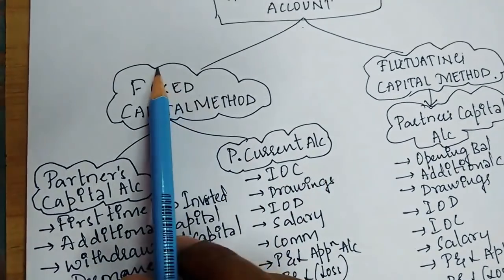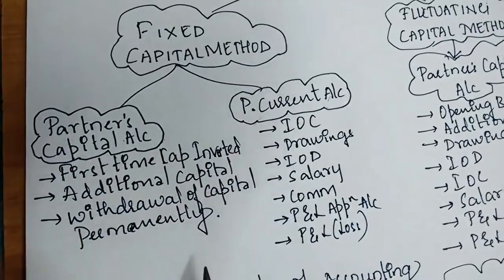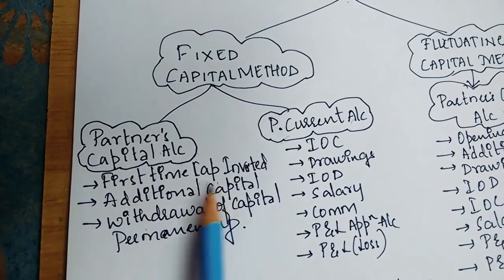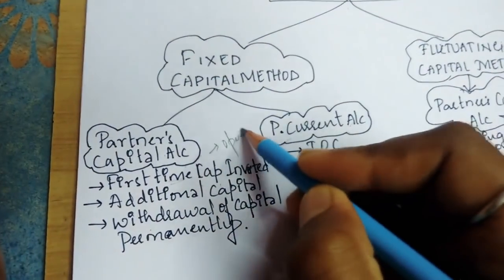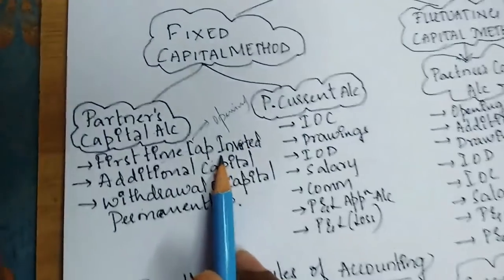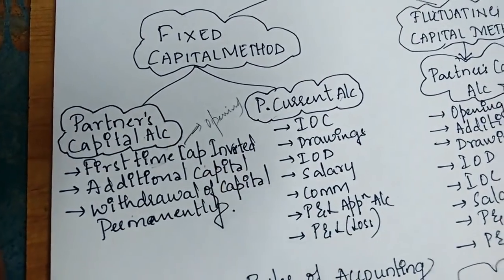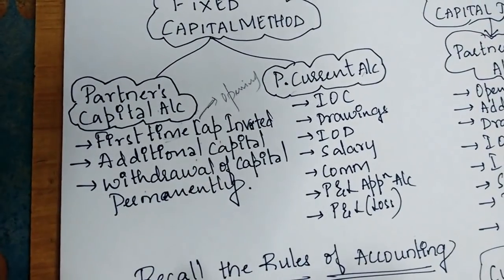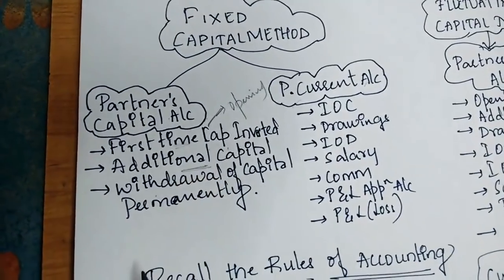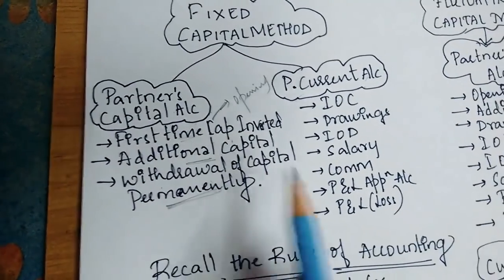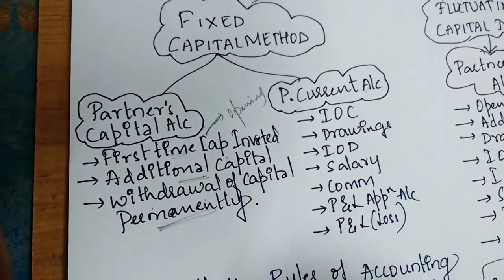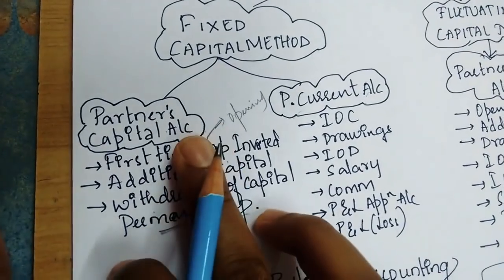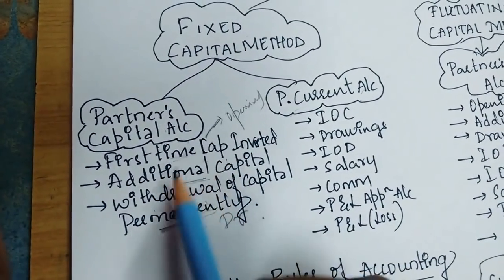Under the fixed capital method, two accounts are written: the partner's capital account and the partner's current account. In the capital account, items recorded include: opening capital on the credit side, since capital increases are credited; additional capital invested, which is also credited; and withdrawal of capital permanently, which is debited. These items are fixed. Fluctuating items go into the current account.